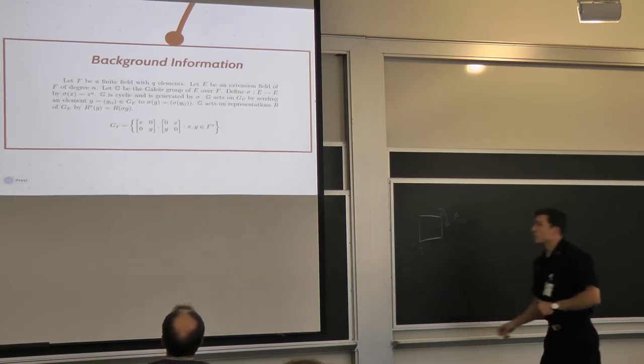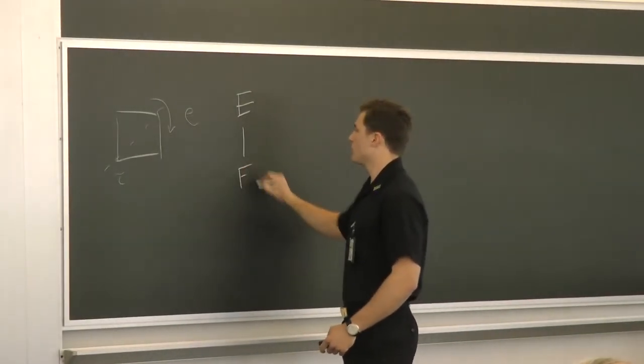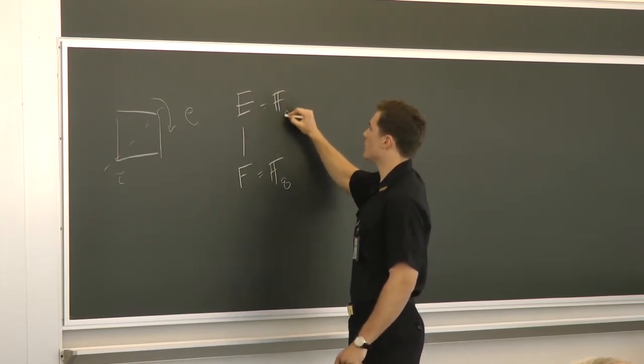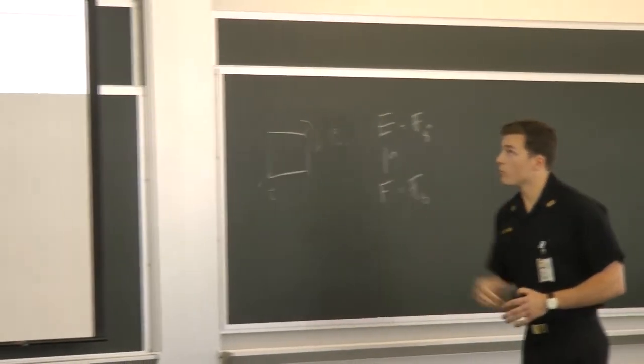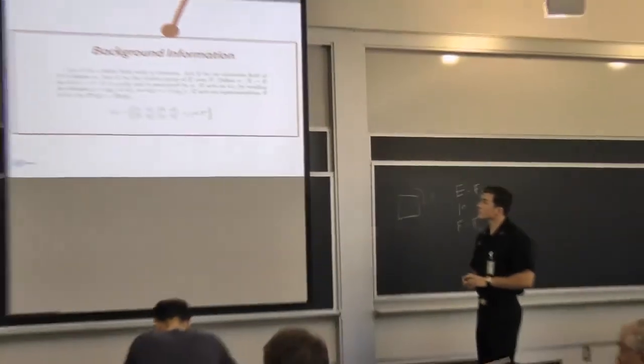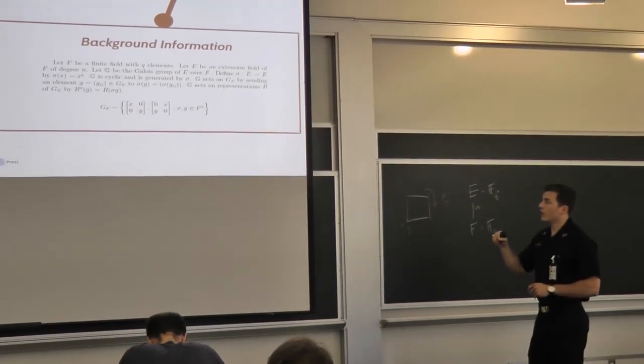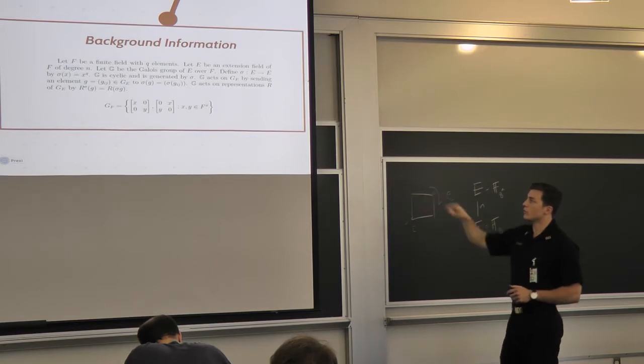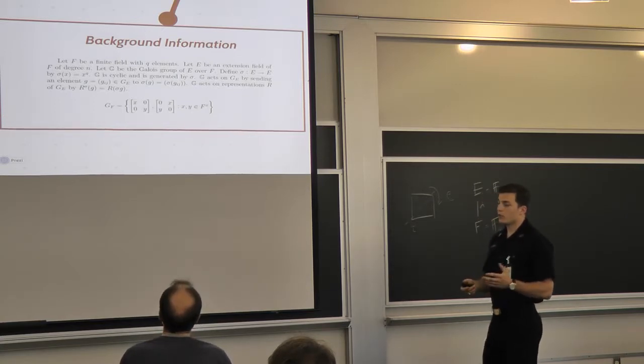So a little background information. We started off with two fields, E and F. So E was a finite field extension over F, where F was some field F sub Q, and this was F sub Q to the N. So the degree of our field extension was N. And we defined the Galois group of E over F acting on E, where each element sigma in that Galois group would act on the individual elements of E and F. So when you see the G sub ij, those are just the elements of those matrices that you see in G sub F.